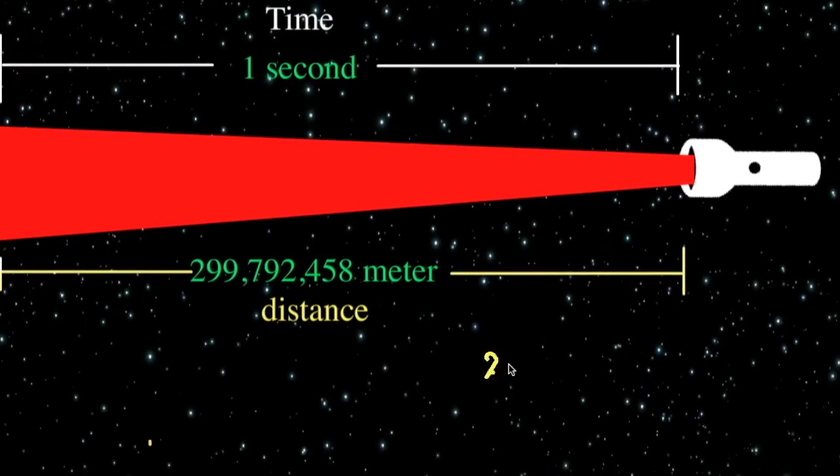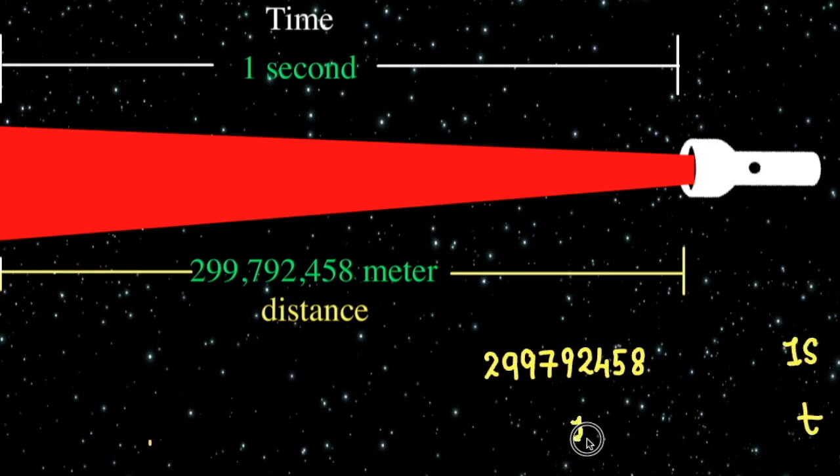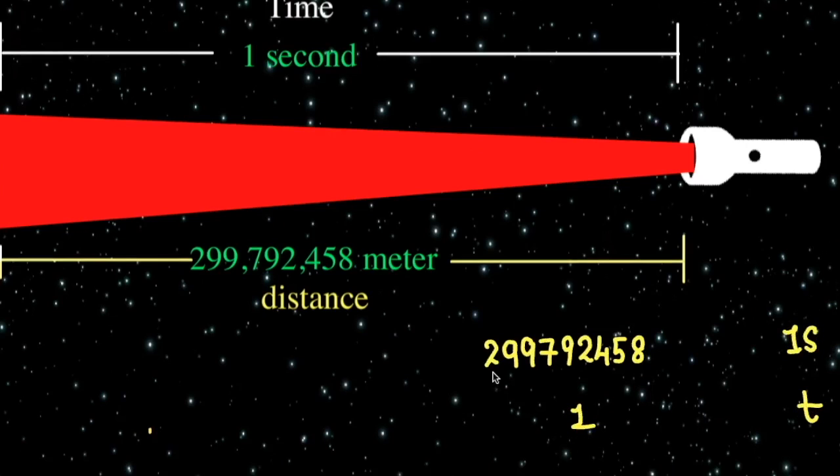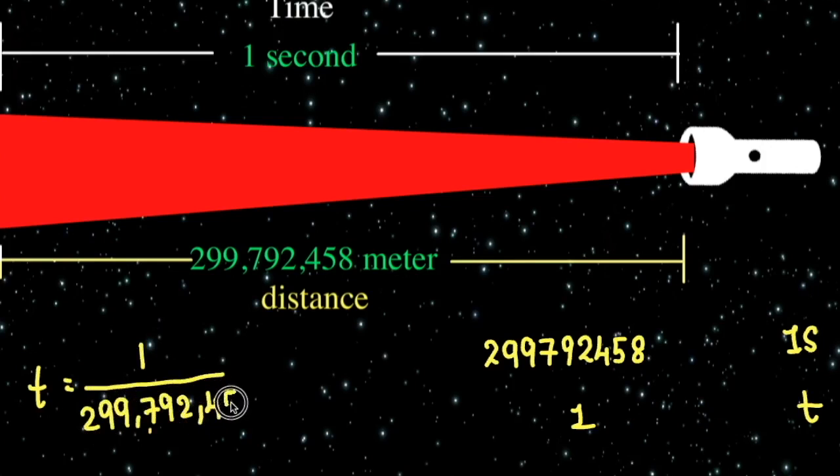So mathematically, if light travels 299,792,458 meters in 1 second, so in what time does light travel exactly 1 meter distance? By cross-multiplying, we can calculate t that equals 1 upon 299,792,458.